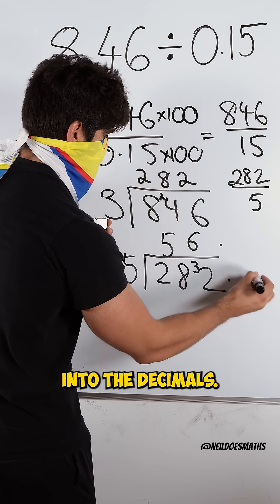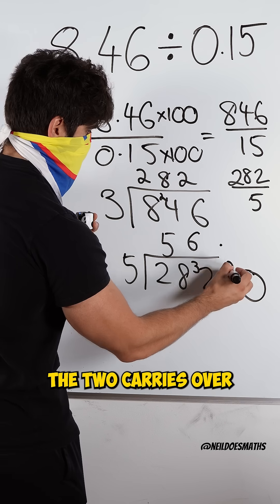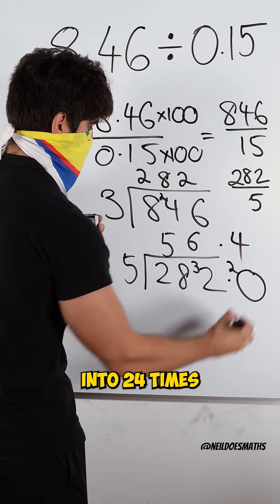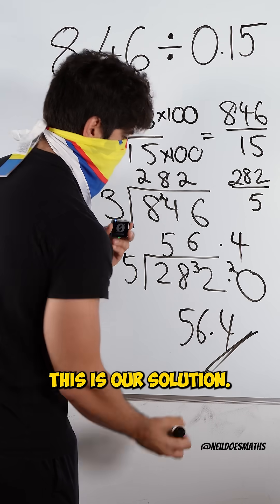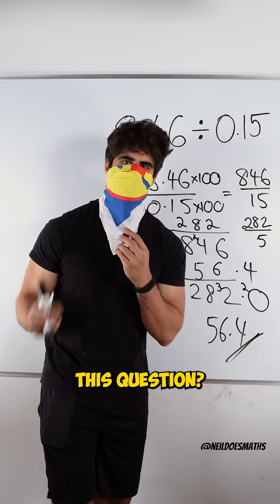But I need to extend into the decimals now. Add a 0 here. The 2 carries over. 5 goes into 20 four times. And this is our solution. What do you guys think about this question?